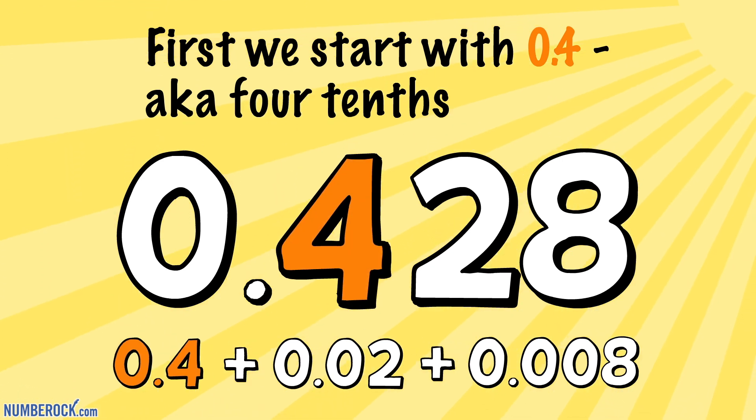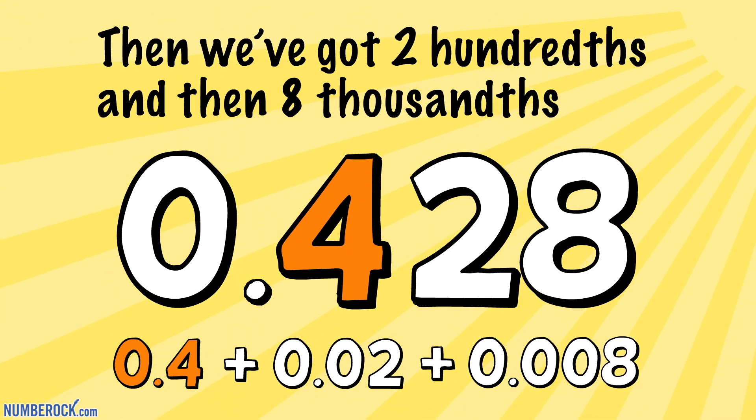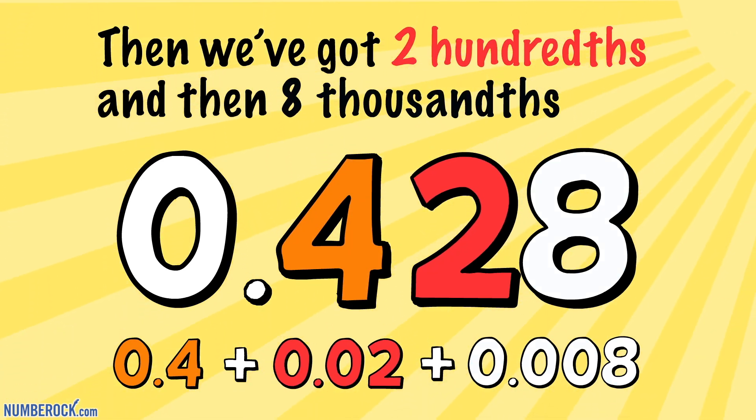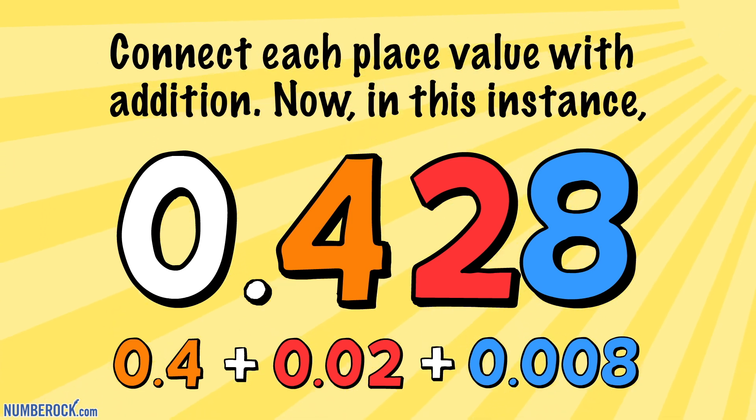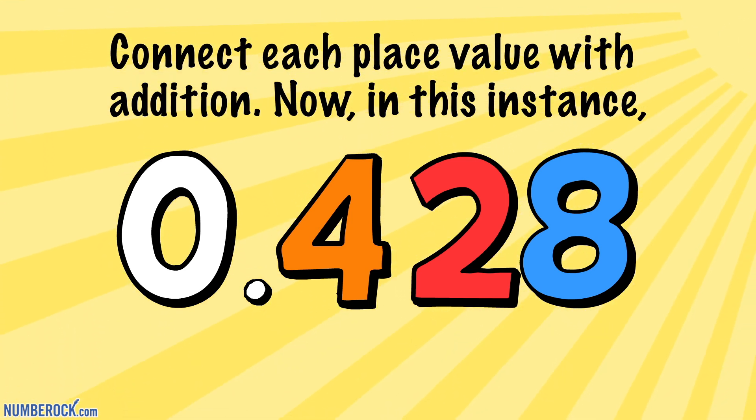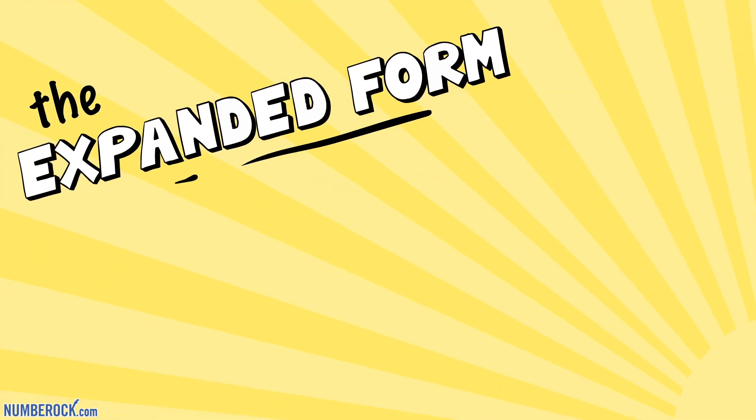First we start with 0.4, aka four tenths. Then we've got two hundredths and then eight thousandths. Connect each place value with addition. Now in this instance, the expanded form is four tenths plus two hundredths plus eight thousandths.